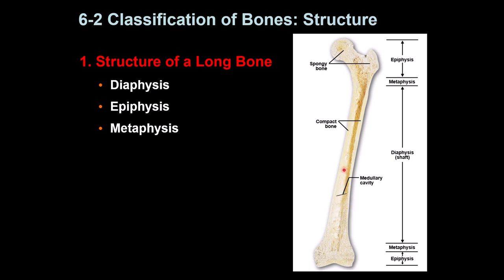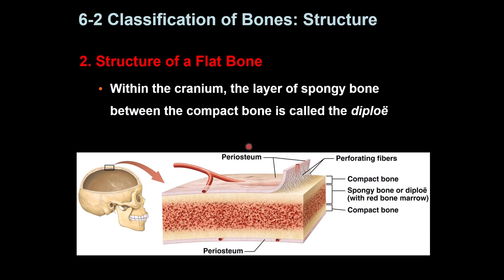The flat bone has spongy bone and bone marrow as well. It has two surfaces — one on each side. In the periphery it is made of hard compact bone, and in the middle there is spongy bone — like a sandwich. It is also covered by periosteum on both sides, which I will discuss later. You can see this structure in the skull and also in the chest bone.